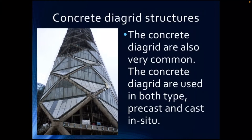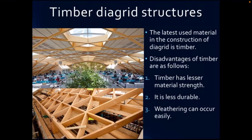Concrete diagrid structures are also very common. Concrete diagrids are used in both precast and cast-in-situ forms. The precast concrete sections are flexible, allowing them to fit perfectly within the structural geometry. Concrete also provides protection from fire damage, though it contributes more to the dead load of the structure.